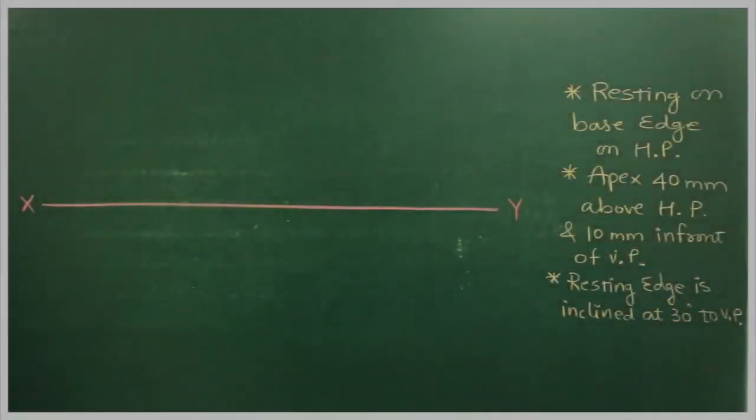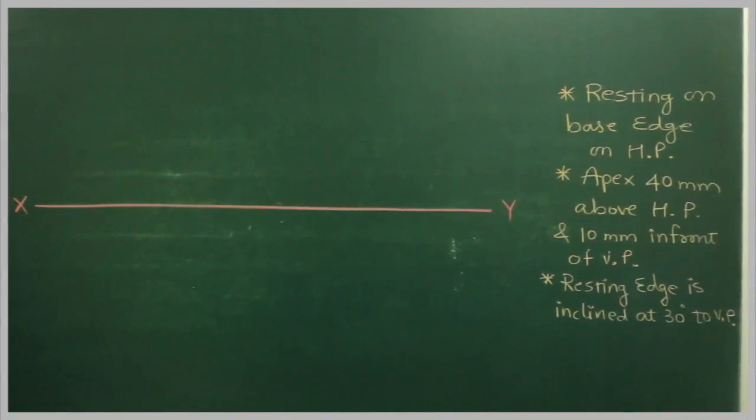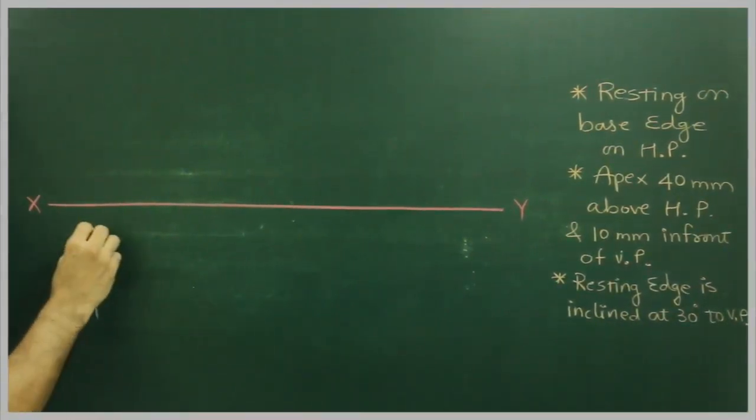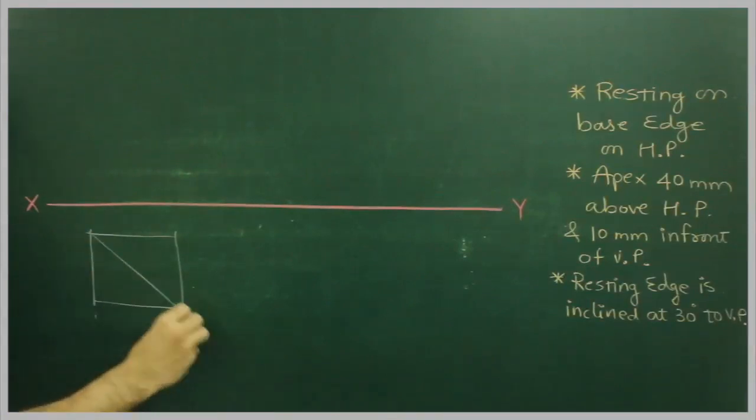In this problem, the pyramid is resting on one of its base edges on HP. The apex is 40mm above HP and 10mm in front of VP, and the resting edge is inclined at 30 degrees to VP. So what we will do first, since it is resting on its base edge on HP, we will start with the top view. First we will assume that it is resting on its base on the horizontal plane.